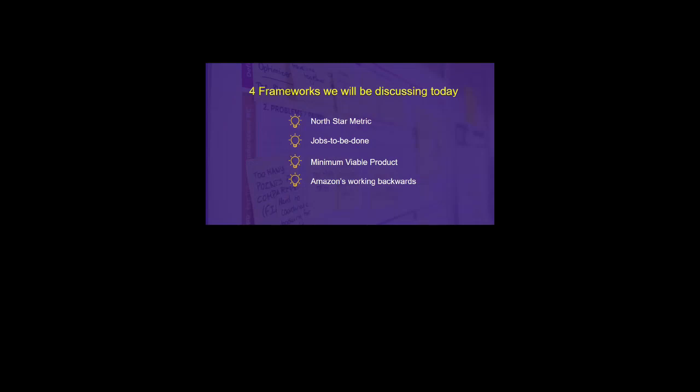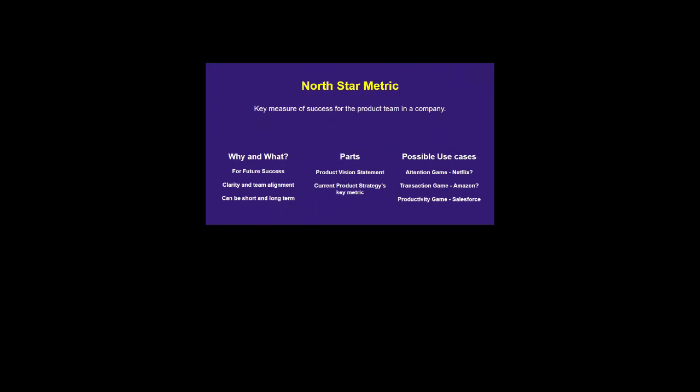The four frameworks we'll be discussing today are: North Star Metric, Jobs To Be Done, Minimum Viable Product, and Amazon's Working Backwards. My two favorites are Jobs To Be Done and Amazon's Working Backwards — you'll understand why shortly. If you find these hard to understand or feel they are jargon, please stop me and I'll try to make them simple.